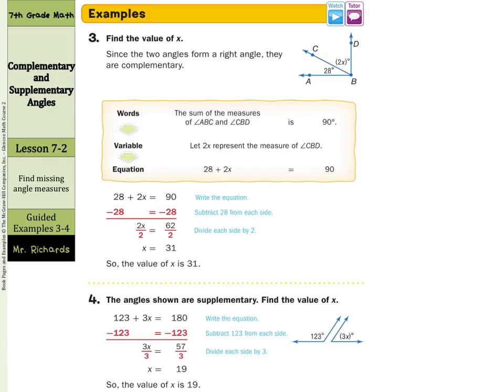Same concept with example 4. We have two angles that add up to be 180 degrees. We're told they're supplementary. So we can take the 123 degrees and the 3x degrees and say that they are equal to 180 degrees and then solve.